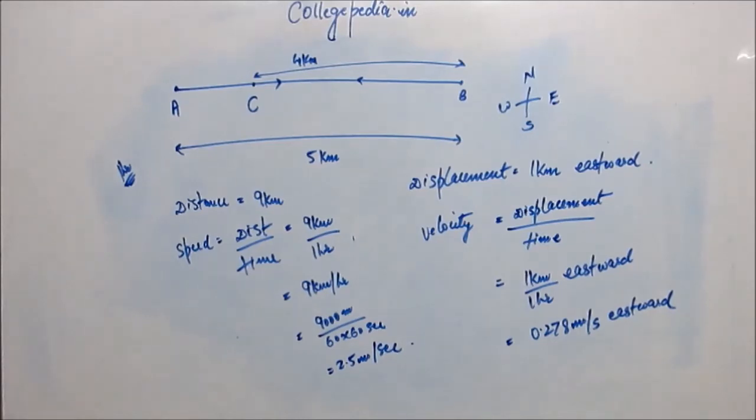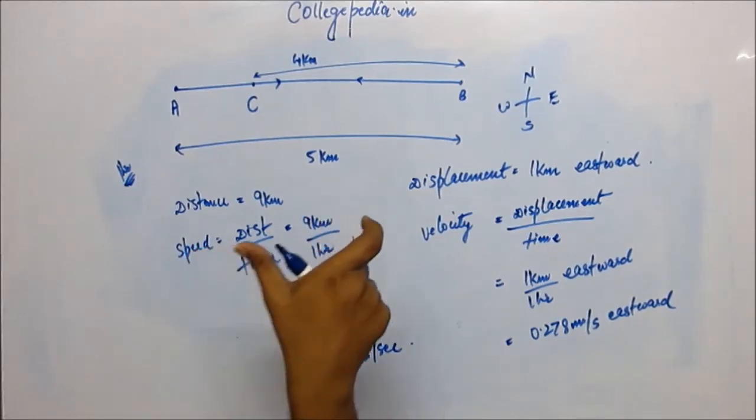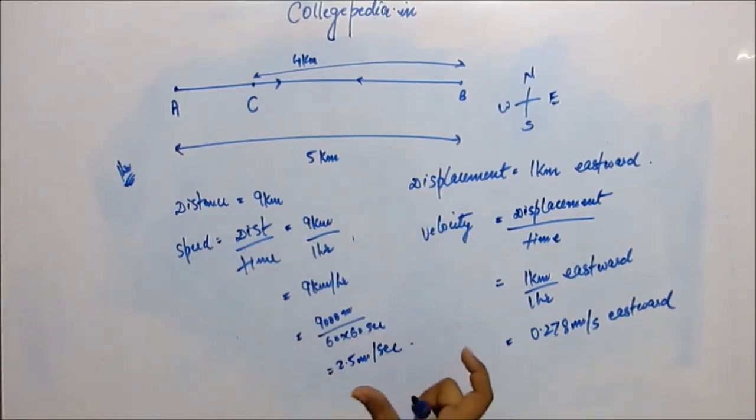But when we go into finding out the actual speed at each and every point of the distance, then we move into the real kinematics that we are going to study now. These simple situations you've studied before—maybe part by part, breaking the journey into different sections and finding the average velocity of each section. But you have not ventured until now to actually find the speed at each and every point of the journey.